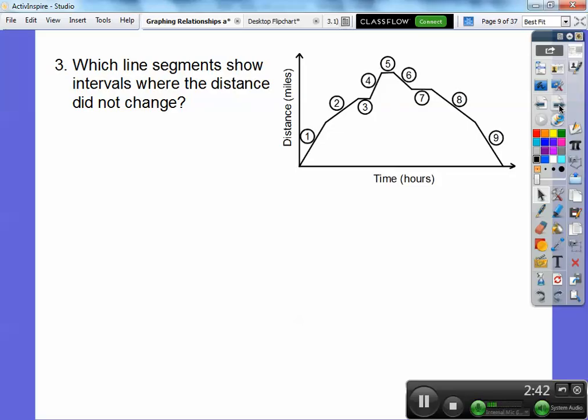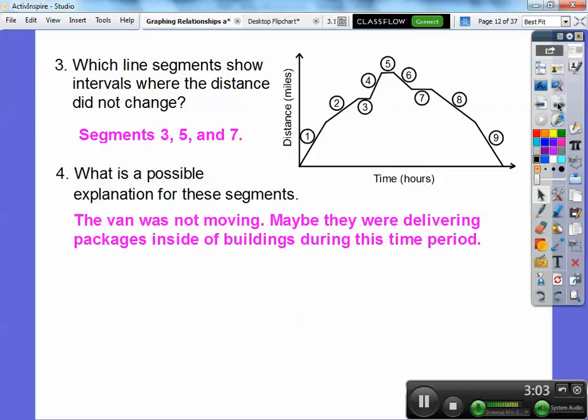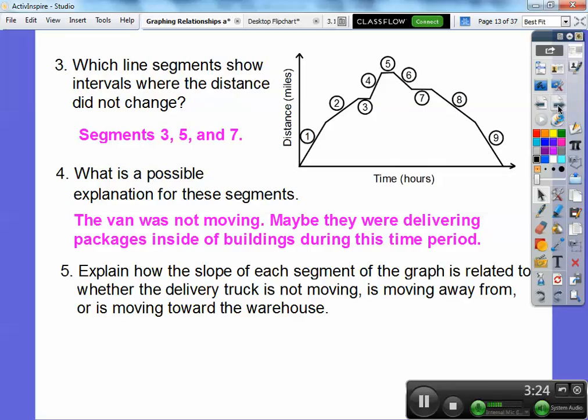Which line segments show the interval where the distance did not change? Well right here it looks like the distance hasn't changed at line interval three, five and then also seven right there. So three, five and seven. What is the possible explanation for these segments right here? Well, if it's a delivery van, I'm guessing that they stopped to deliver packages or flowers or whatever. So the van wasn't moving there. So maybe they were delivering packages inside of buildings during that time period right here. Because here's the time going by right here. So the time here is earlier in the day from here to here. So the van stayed still right there and again right there and again right there. So they're probably delivering packages or whatever, getting lunch or something.